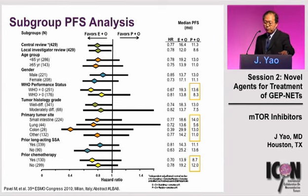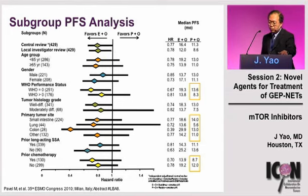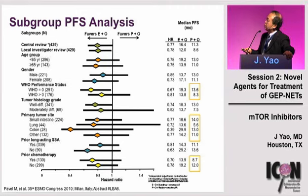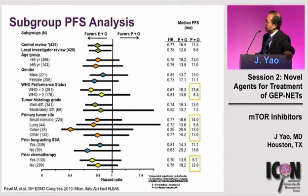Subgroup analysis again showed evidence of benefit favoring everolimus across all subgroups, similar to RADIAN-3. However, it's important to note that randomization placed more patients with performance status 1 and 2 — and three times as many patients with lung primaries — in the everolimus arm. These are worse-prognosis patients, with median PFS in the 5.6-month range for lung primary versus 11-14 months for other primary sites. There were also more patients with prior chemotherapy in the everolimus arm, another group with worse prognosis.